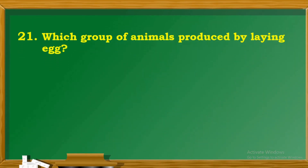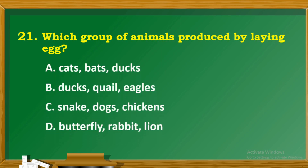Question 21: Which group of animals reproduces by laying eggs? A. Cats, bats, ducks. B. Ducks, quail, eagles. C. Snake, dogs, chickens. D. Butterfly, rabbit, lion.